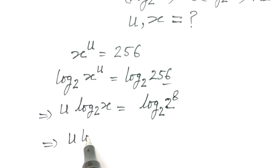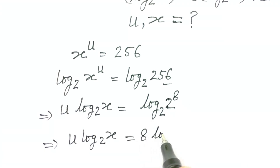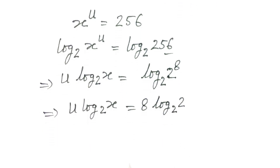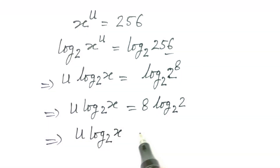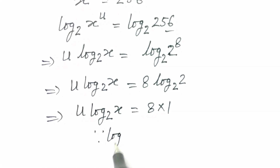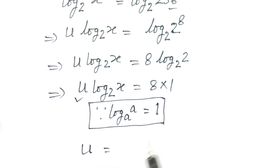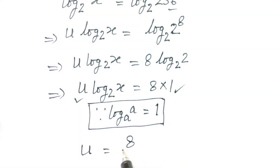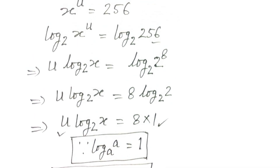So u times log of x base 2 is equal to 8 times log of 2 base 2, which equals 8 times 1, because log of a base a is equal to 1. Therefore, u is equal to 8 over log of x base 2. Now we will go with this.